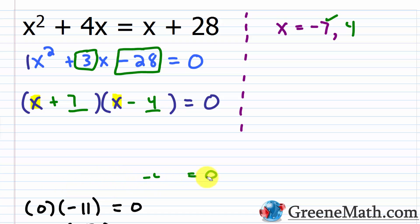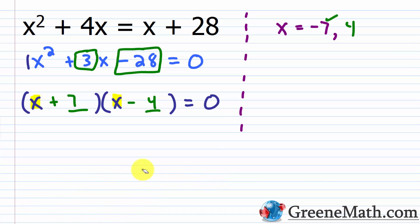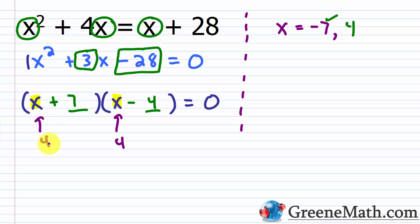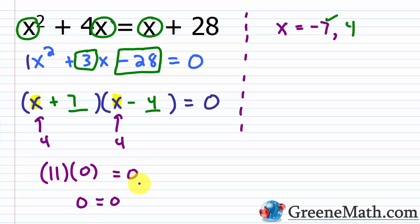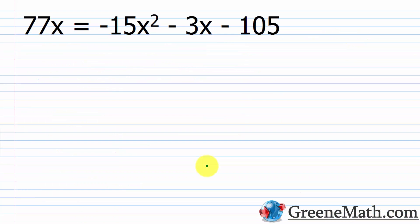You can also check this in the original equation by pausing the video and plugging in negative 7. Checking x equals 4 in the factored form: 4 plus 7 times 4 minus 4 equals 0, which is 11 times 0, which is 0. So 0 equals 0 — a true statement. So our two solutions are x equals negative 7 or x equals 4.